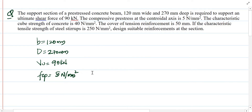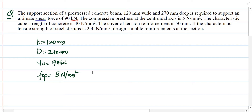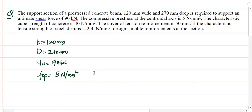The cover to the tension reinforcement is 50 mm. The characteristic strength of the steel stirrups, fyv, is 250 N/mm² — so we are using stirrups having characteristic strength 250 N/mm². We are asked to design suitable shear reinforcement to carry a shear force of 90 kN.